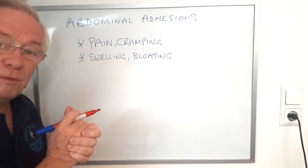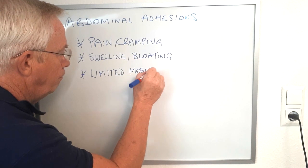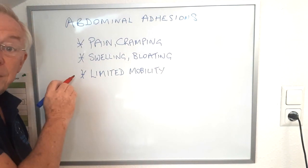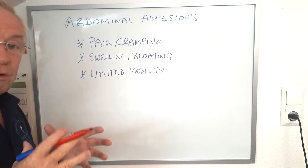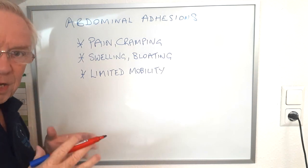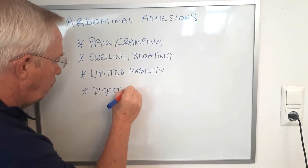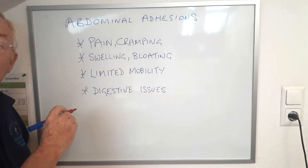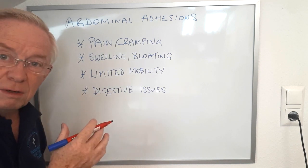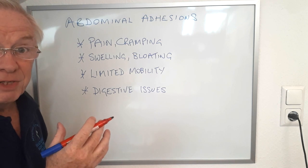And then another one: limited mobility of the trunk, of the torso — moving, flexion, extension, rotation. Another one is digestive issues. This could include nausea, vomiting, and difficulty passing gas.